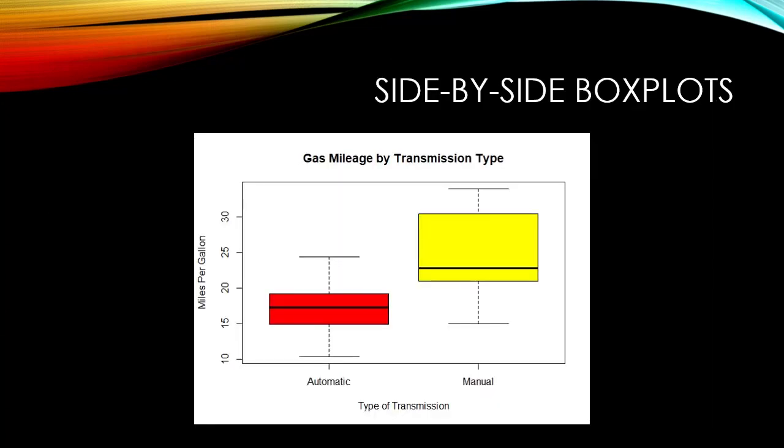Here's a side-by-side box plot. The units of analysis are automobiles. We want to determine if the categorical variable transmission type is related to the quantitative variable gas mileage.